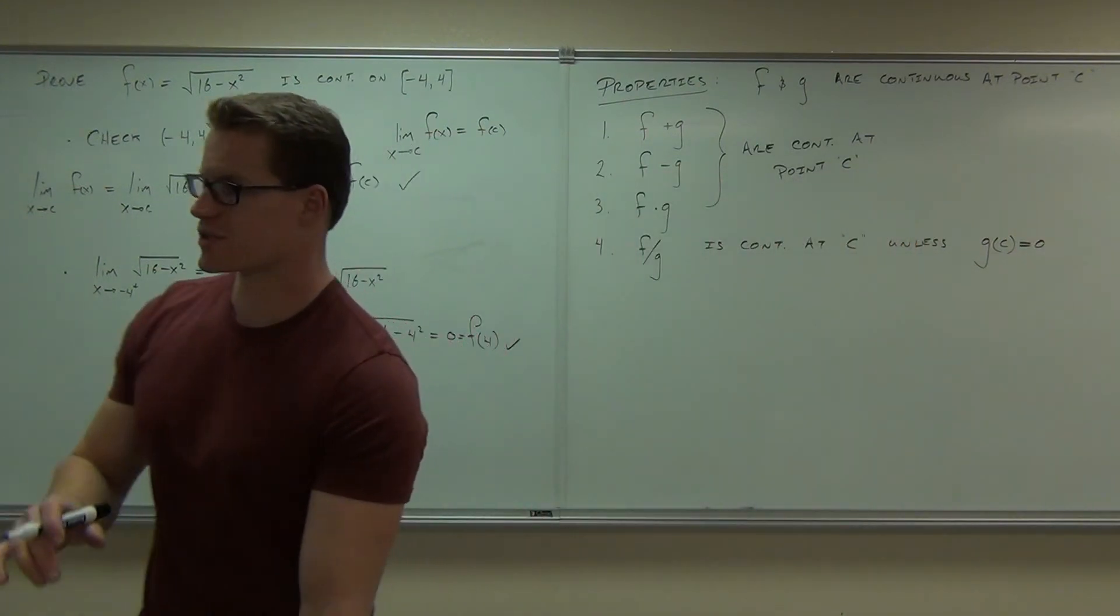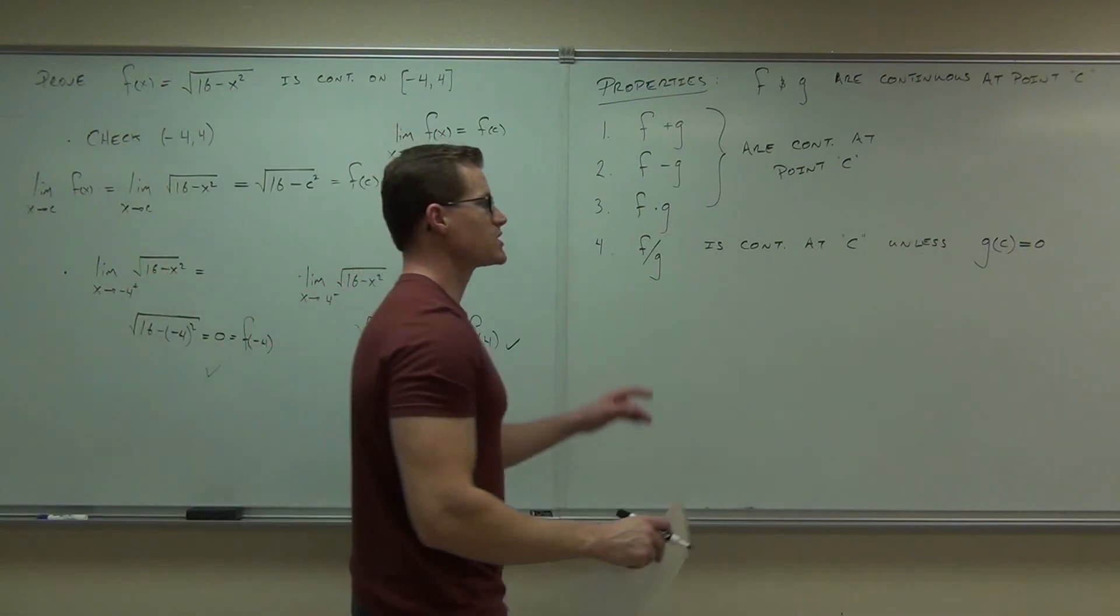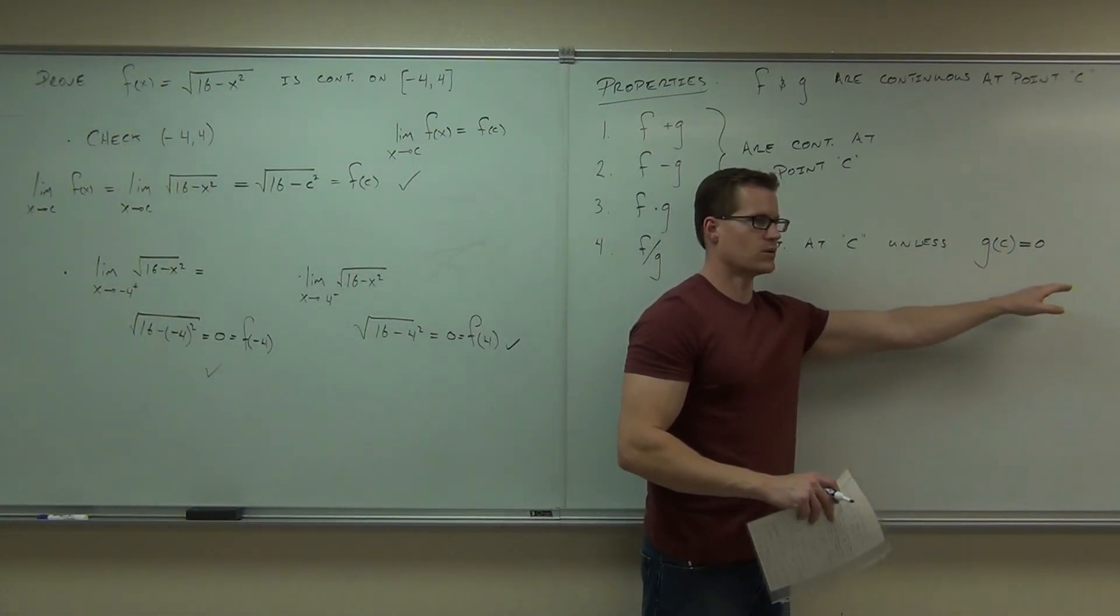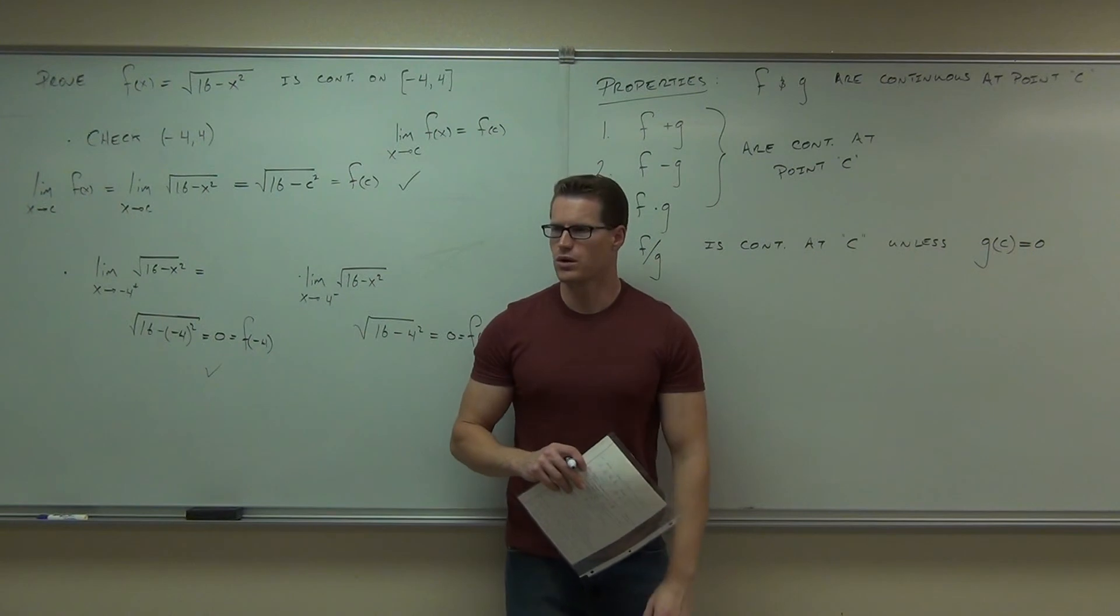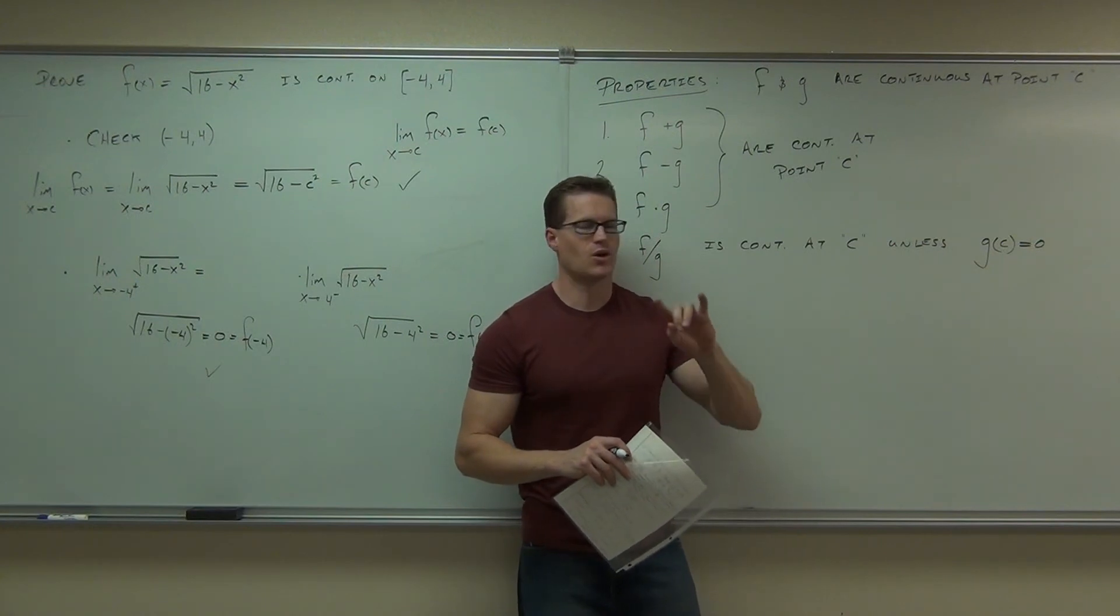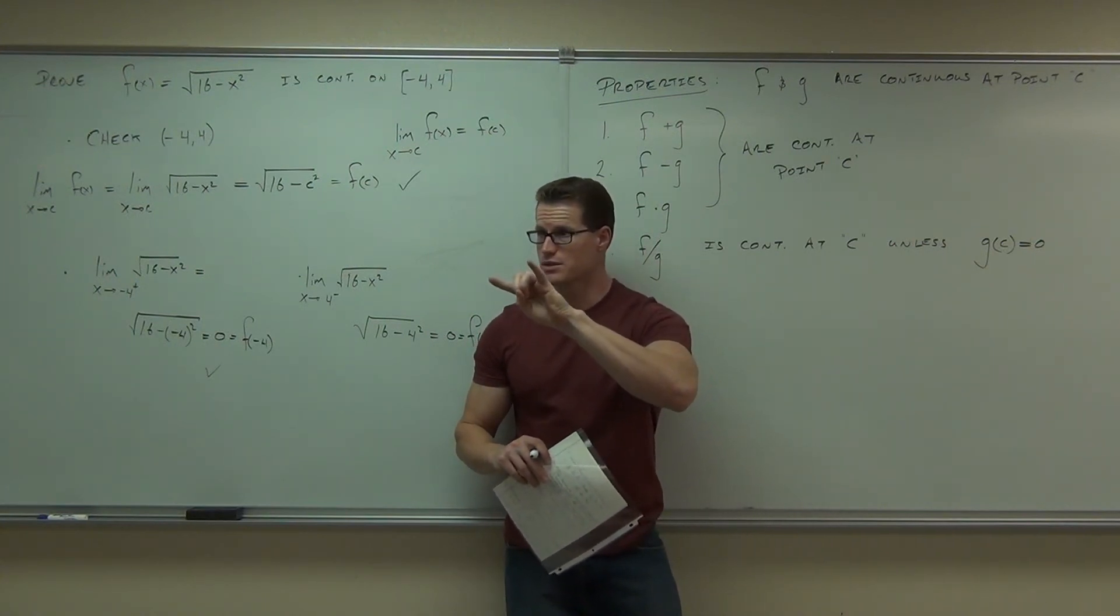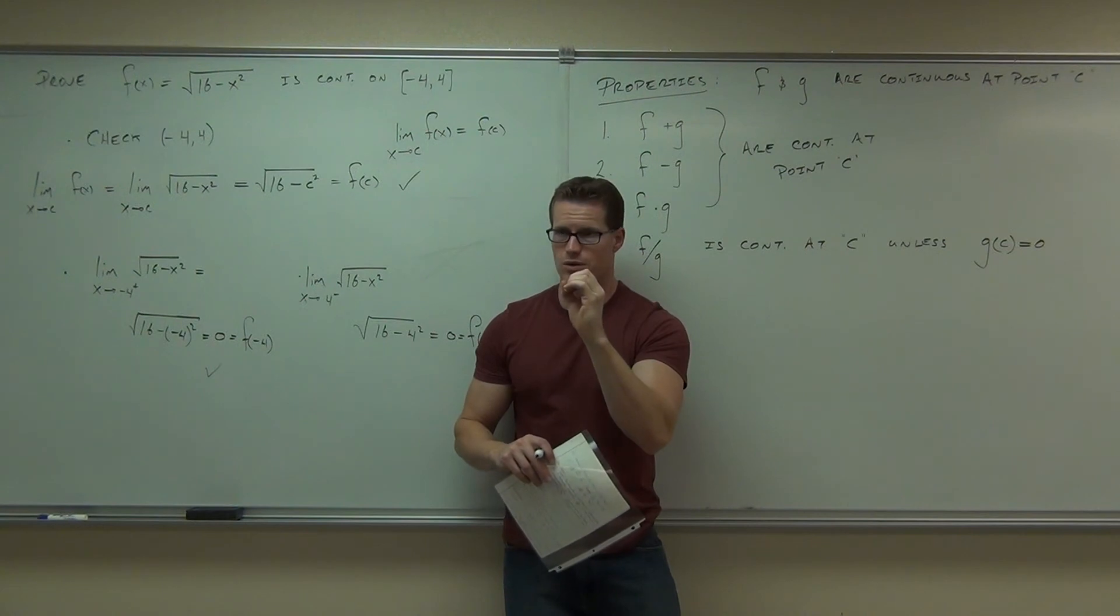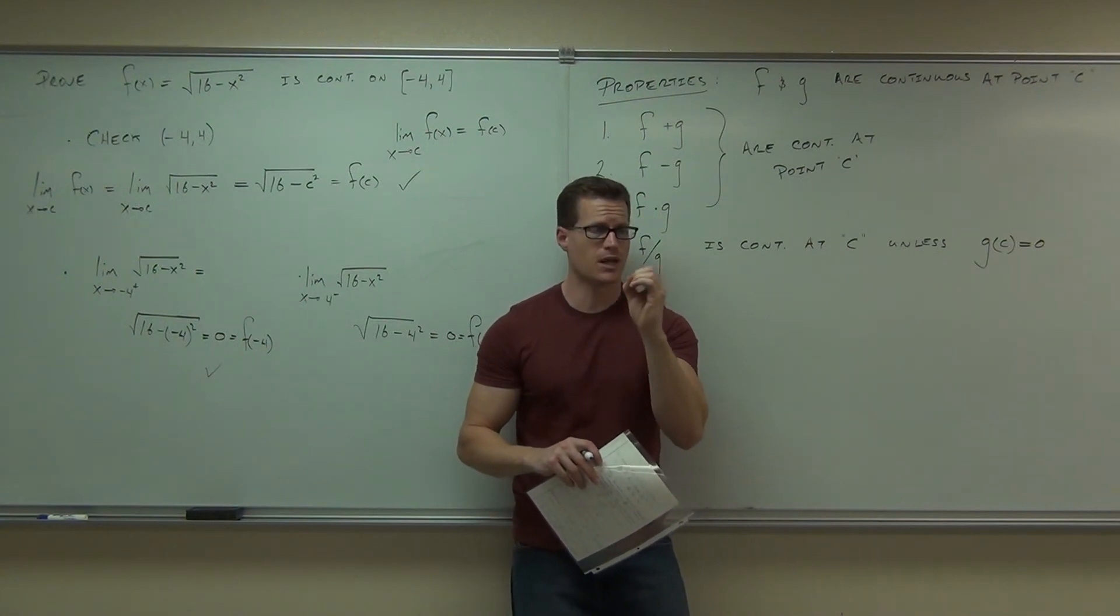So it is continuous at c unless g of c equals zero, and then you'd have a problem. If it does, if g of c does equal zero, what does that tell you about your function? Firstly, is it continuous? Secondly, there are two cases when you divide by zero. There's two cases of what you could have. Name one.